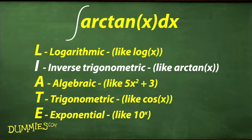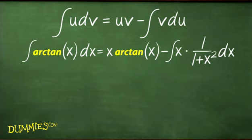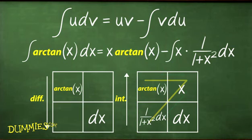Everything else is your dv, namely, plain old dx. Next, do the grid thing. Plug everything into the integration by parts formula or draw the imaginary 7 in the box on the right. Now you can finish this problem by integrating x times 1 over 1 plus x squared with the substitution method.